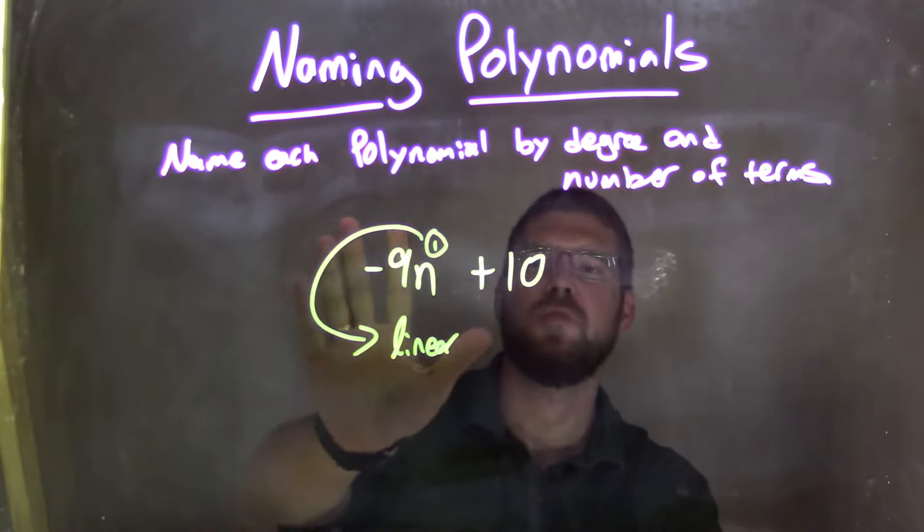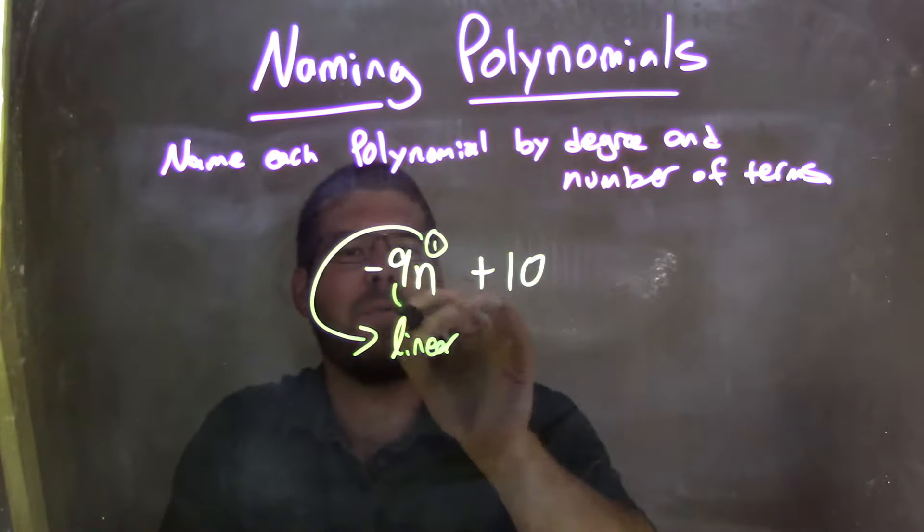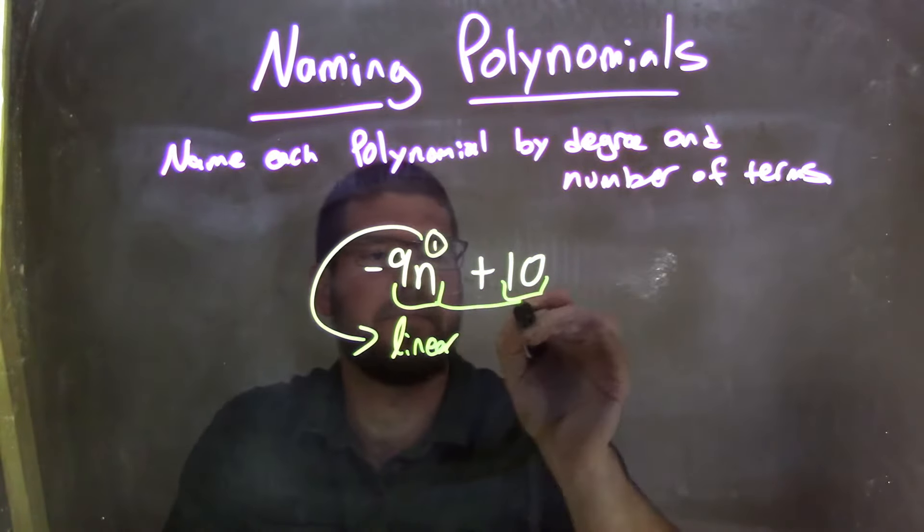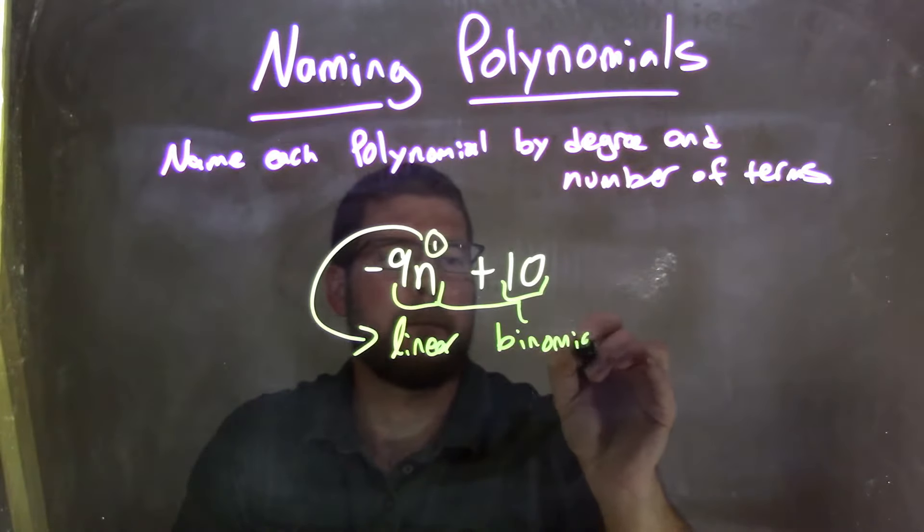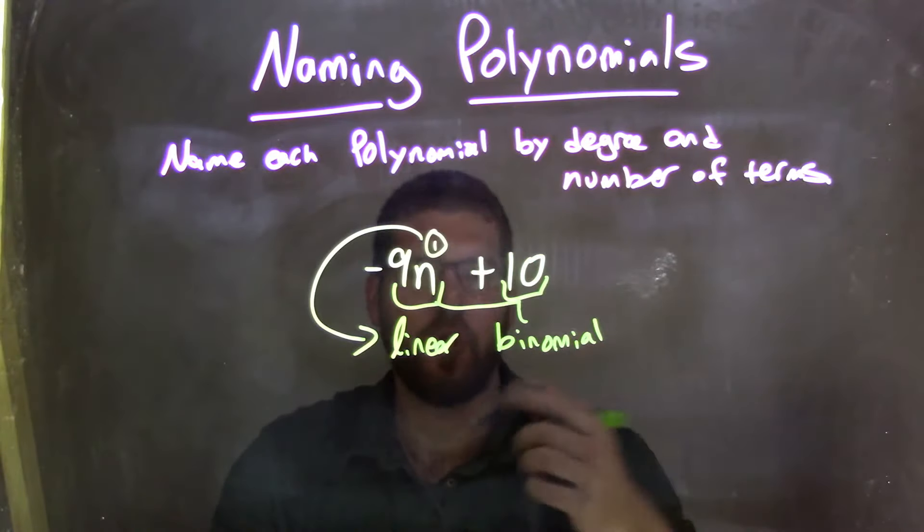Then we have two terms: n to the first power, and then just our constant there. So our two terms, two sections there, tell us this is a binomial. So I would finally classify this as a linear binomial.